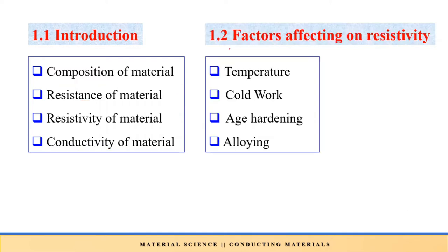Now let's discuss the factors affecting on resistivity. Four factors are mentioned: first is temperature, second is cold work, third is age hardening, and fourth is alloying. Regarding the effect of temperature: if we increase the temperature of any metal, loosely bounded electrons get detached from the parent atom, helping to improve the flow of current. This increase in current flow means there is a decrease in resistance of that material.